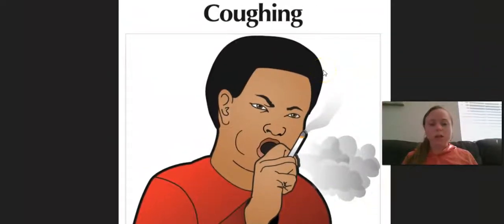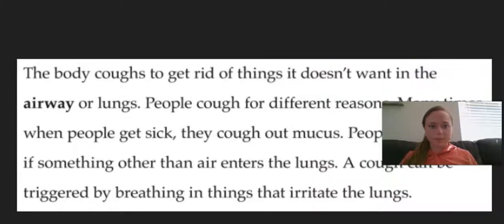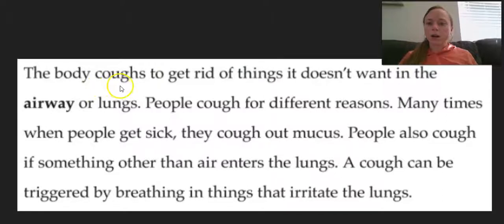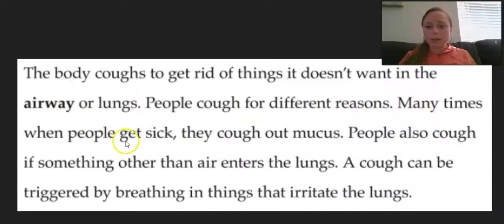Here's a picture of someone coughing. The body coughs to get rid of things it doesn't want in the airway or the lungs. People cough for different reasons. Many times when people get sick, they cough out mucus, that thick, sometimes green or yellow stuff that we may cough up. People also cough if something other than air enters the lungs. A cough can be triggered by breathing in things that irritate the lungs.